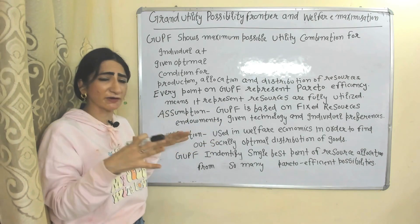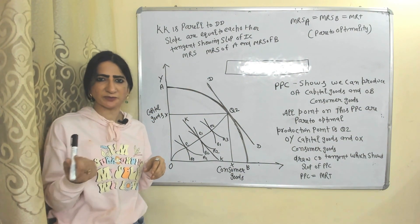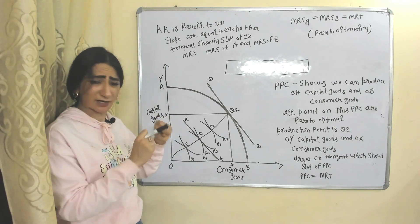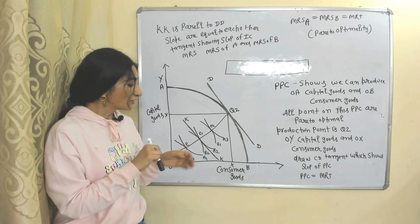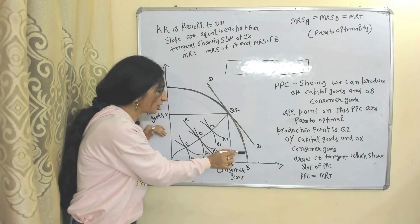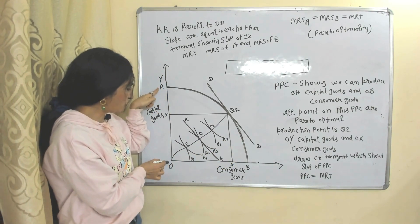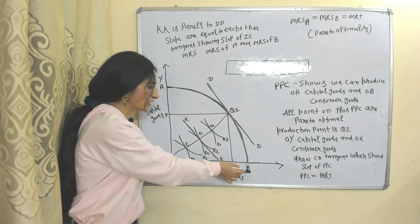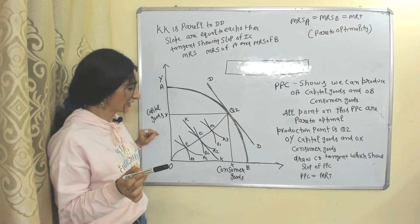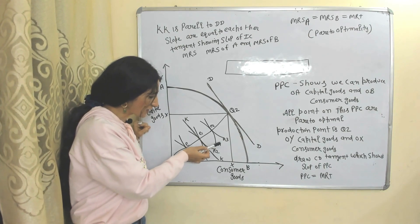Now we'll see how to derive a Grand Utility Possibility Frontier. First, you need to understand this diagram — we have already discussed Pareto optimality. On the x-axis we have consumer goods, on the y-axis we have capital goods. AB is the production possibility curve, which shows the economy can produce OA capital goods and OB consumer goods, and all points on the production possibility curve show Pareto optimality.